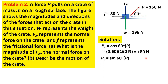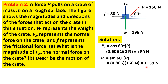For the y-component, the formula is Py = sin(60°) × P. The sine of 60 degrees is 0.866, multiplied by P = 160 Newtons, giving Py = positive 139 Newtons. The y-component of force P is directed along the positive y-axis, meaning vertically upward.